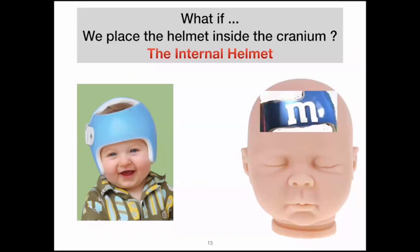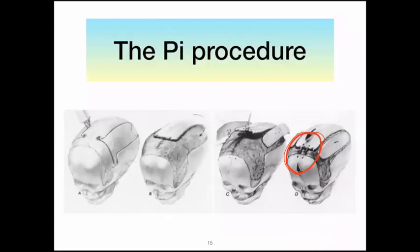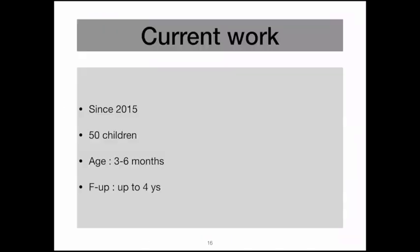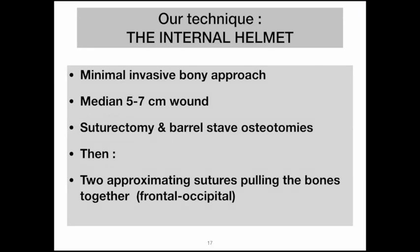What if instead of putting the helmet on the child's head from outside, we put the helmet from inside — restricting skull growth from within? My first inspiration came from the PI procedure, where after unlocking the skull, they tie the frontal bone antero-posteriorly to shorten the skull and prevent it from elongating. My procedure is a modification of this. We started doing the internal helmet technique since 2015 and have more than 50 children. The ages vary from three to six months, and we followed these children for up to four years and more.